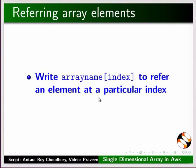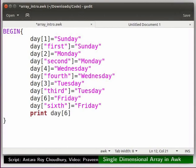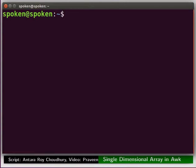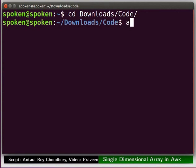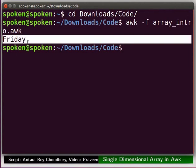Write the array name and the index within square brackets to refer an element at a particular index. Let us try this. Switch to the code once again. Place the cursor in front of the closing curly brace, press enter, and type print space day within square brackets 6. Save the code. Open the terminal by pressing control, alt and T keys. Go to the folder in which you downloaded and extracted the code files using cd command. Now type awk space -f space array_intro.awk and press enter. See, we get Friday as the output.